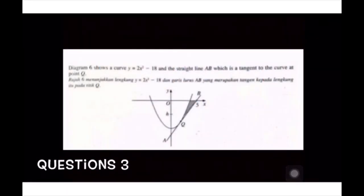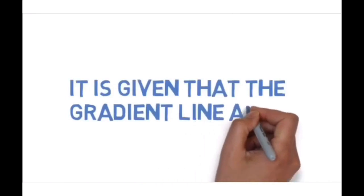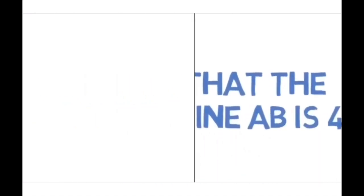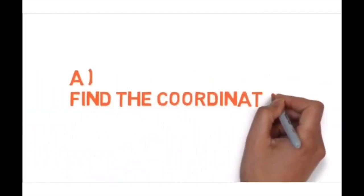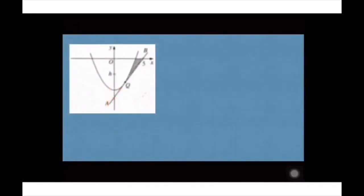Kembali lagi bersama saya Professor Adam. Kita akan teruskan lagi dengan soalan yang terakhir. Kita lihat soalan dulu. Dia bagi line AB gradient 4. Dia suruh cari koordinat point Q. Macam mana nak cari? Kita tahu point Q tangent kepada curve, line tu tangent kepada curve.